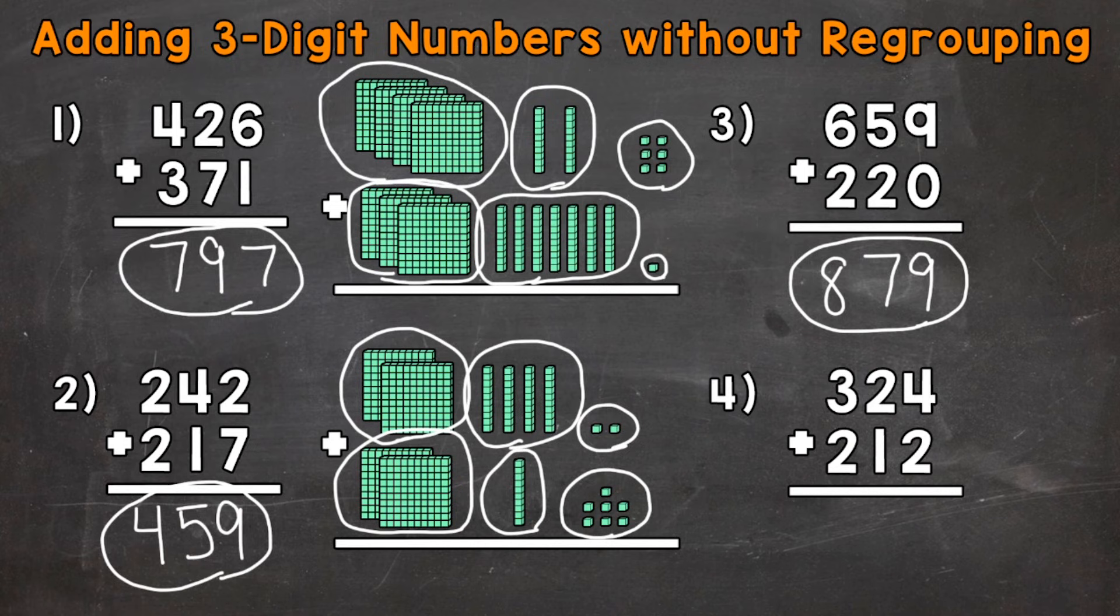And then lastly we have number 4, 324 plus 212. We'll start with the ones. 4 plus 2 is 6. Then we have the tens. 20 plus 10, or 2 plus 1 in the tens place, gives us a 3 in the tens place, which has a value of 30.